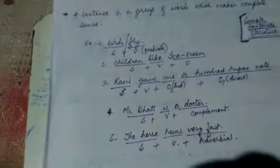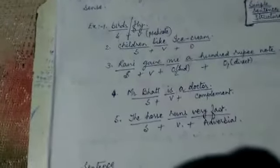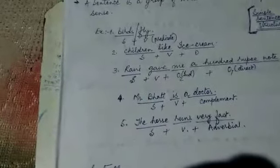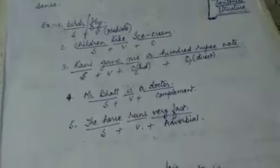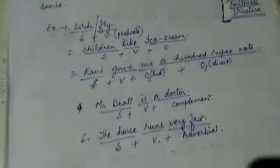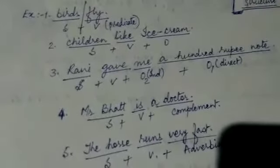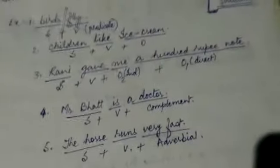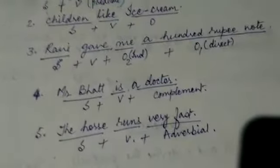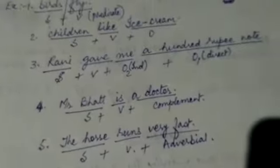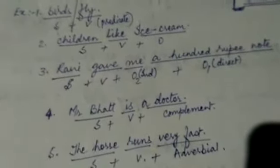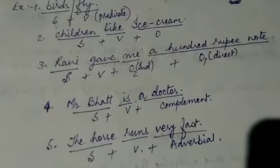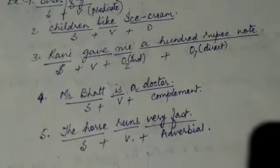The second sentence is children like ice cream. Here we have children as a subject because we are talking about children. Like is the verb which is followed by the subject, and ice cream is the object. So here it's an action verb. Children do something - they like something, and what is it? It's ice cream.